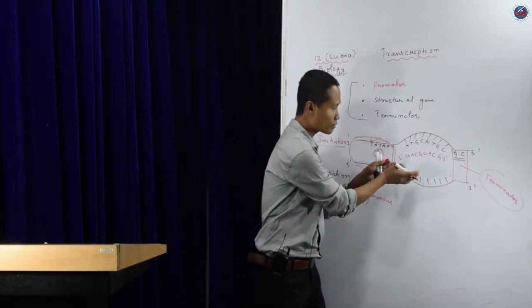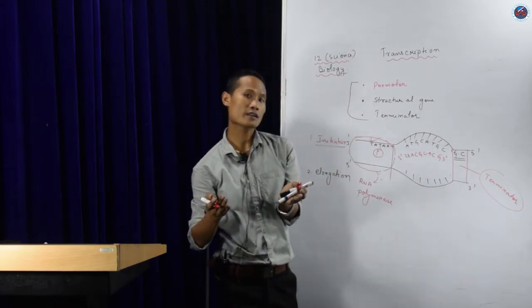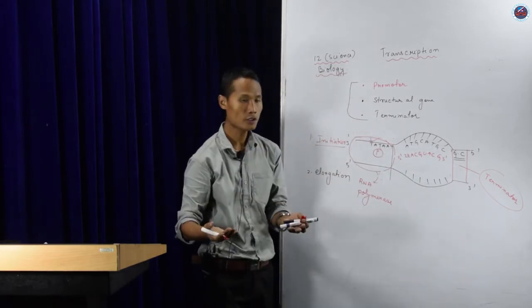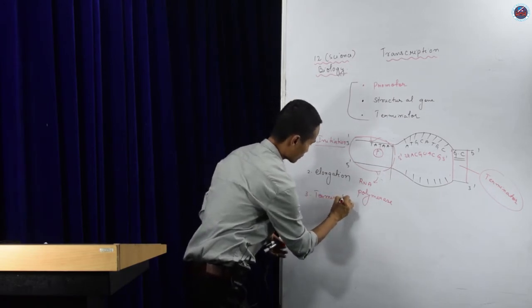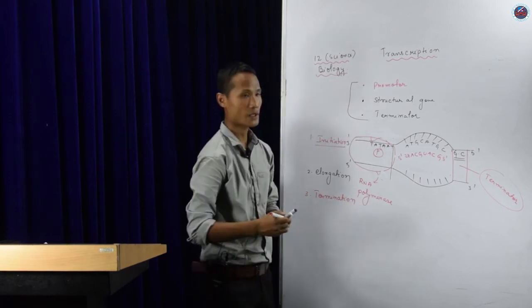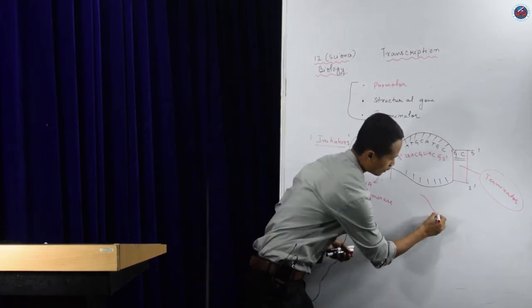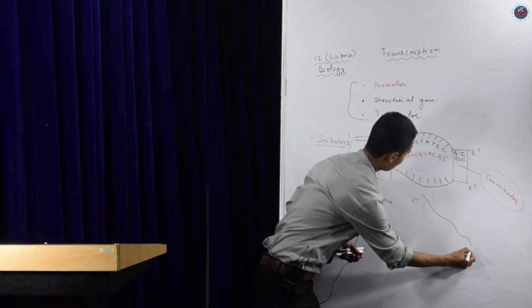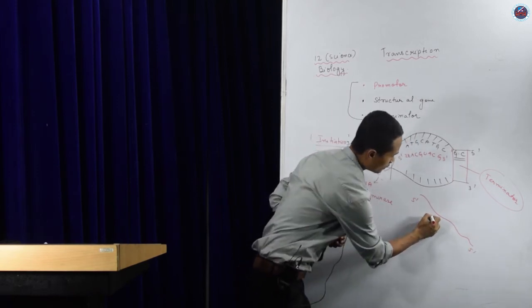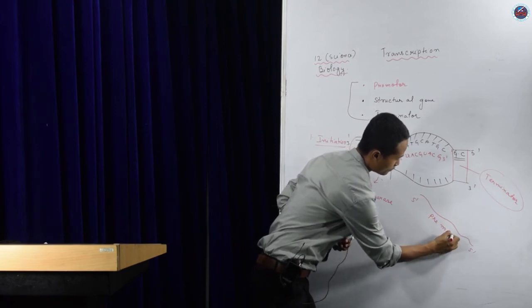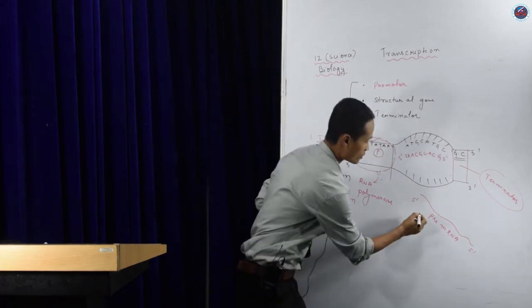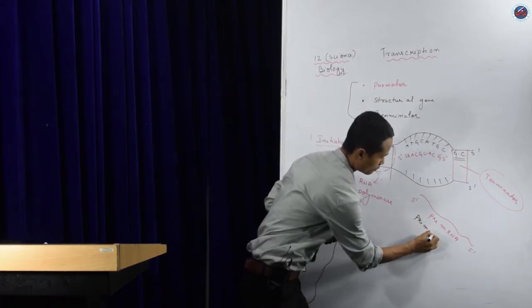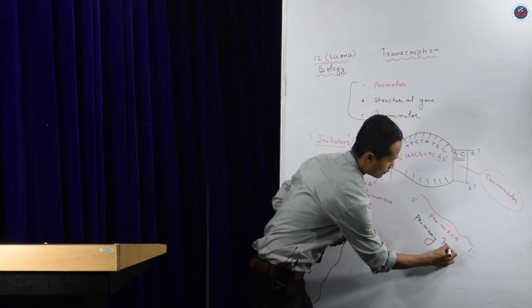In this process, the transcription gets completed — that is said to be termination. The product formed is not simply mRNA; it is actually pre-mRNA, or as referred to in the textbook, a primary transcript.